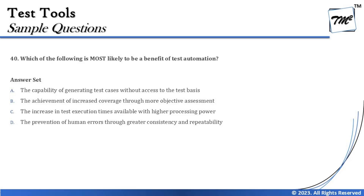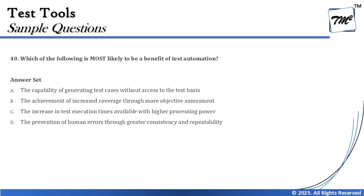Option B says: the achievement of increased coverage through more objective assessment. These are two different things. Objective assessment is a precise, to-the-point measure — for example, the percentage of coverage achieved for a requirement. Increased coverage is about writing additional test cases or doing more testing. Both are not aligned with each other, and this is not a recognized benefit of test automation tools.